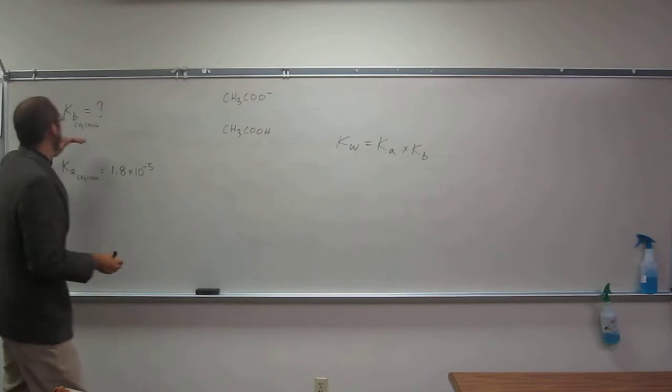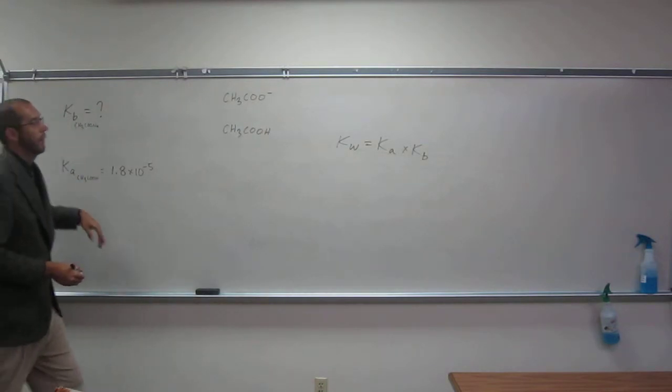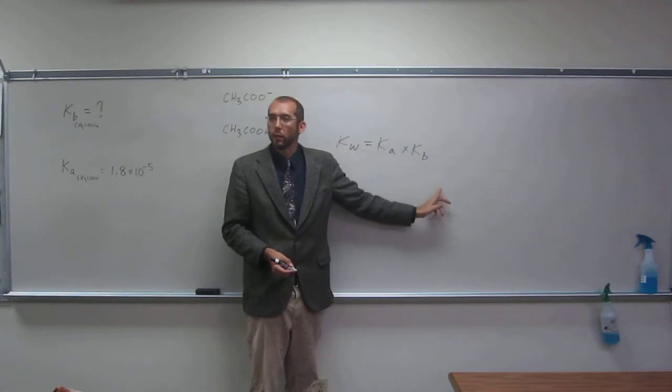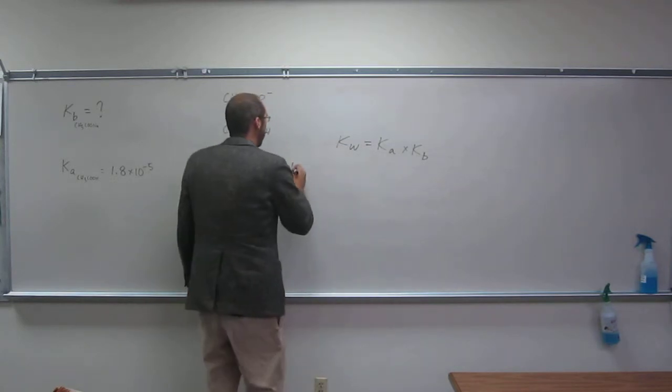Okay, so we're looking for KB. So this is Ka of the acid and KB of its conjugate base. So we're looking for KB.